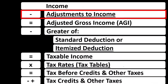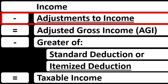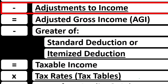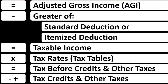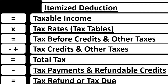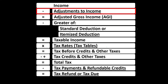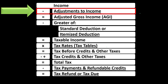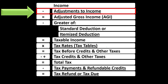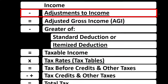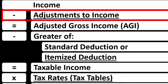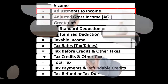We're focused on the adjustments to income, which you might hear called the above-the-line deductions or the Schedule One deductions — keeping them distinct in our minds from the standard deductions and the itemized deductions. The adjustments to income are those deductions up top that bring us down to the adjusted gross income.